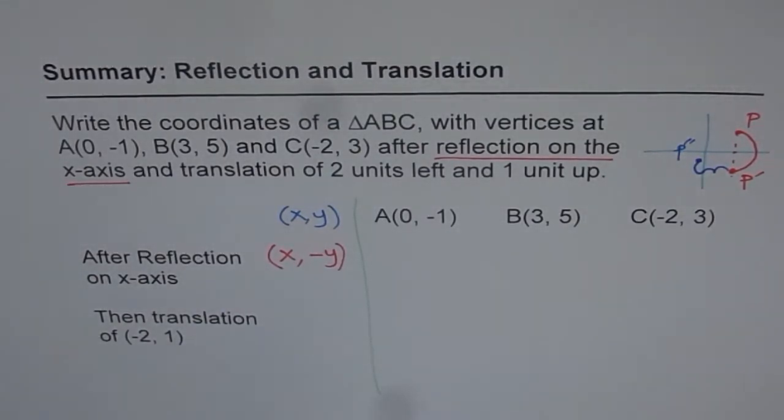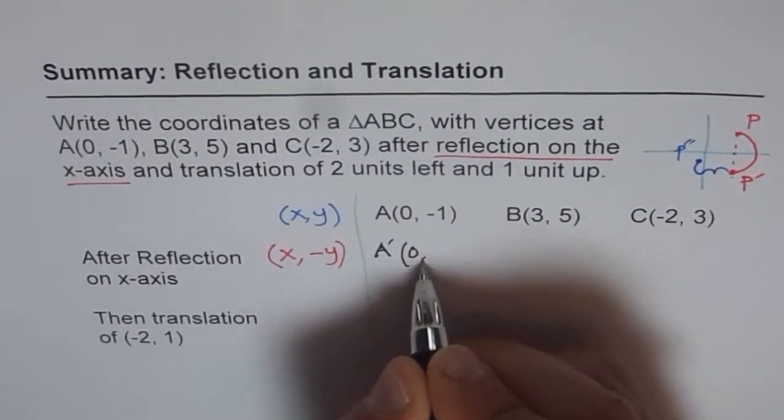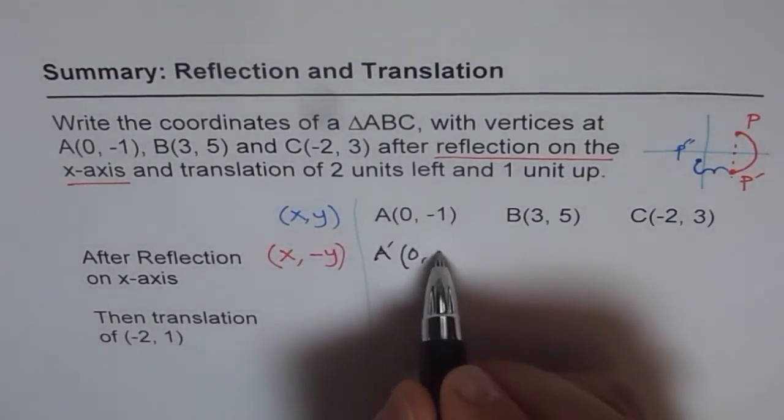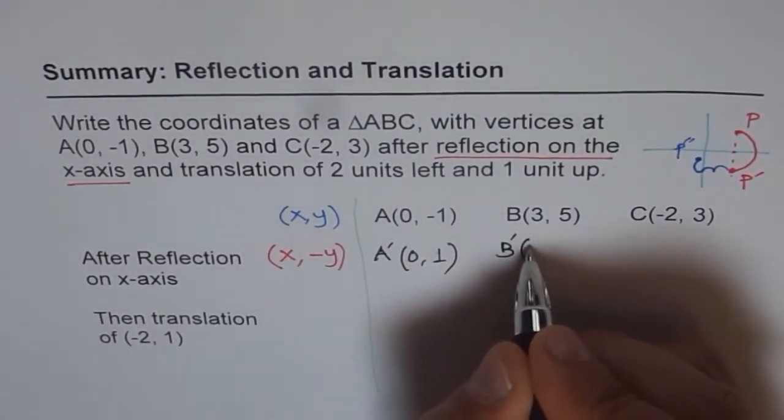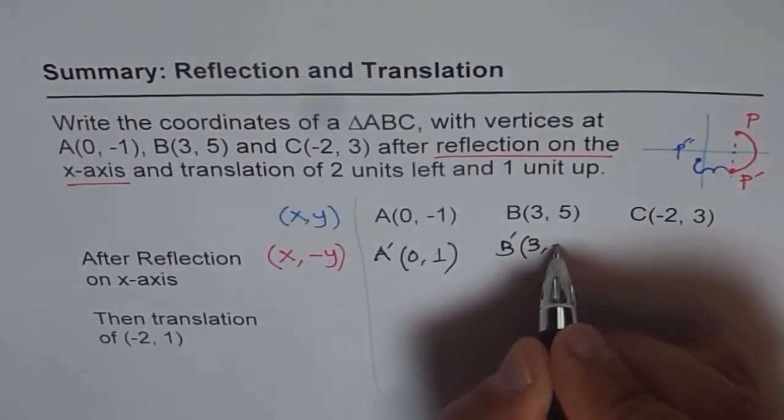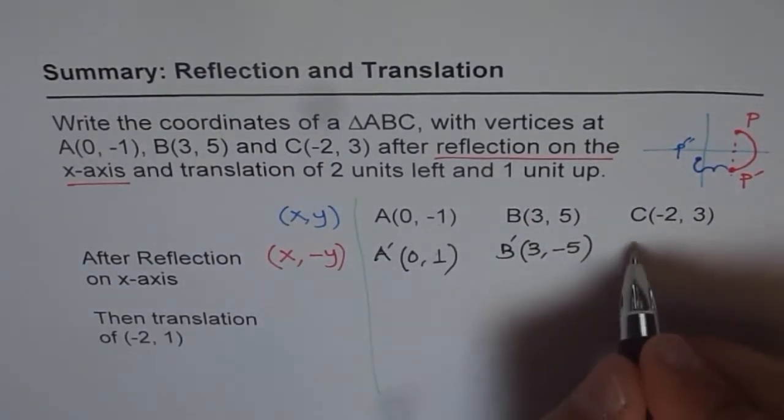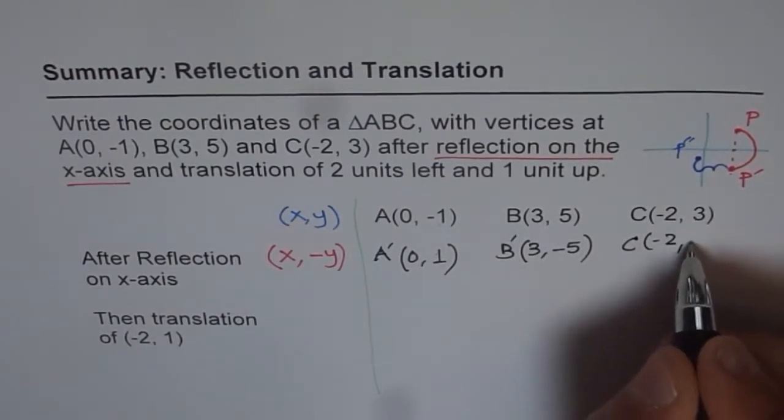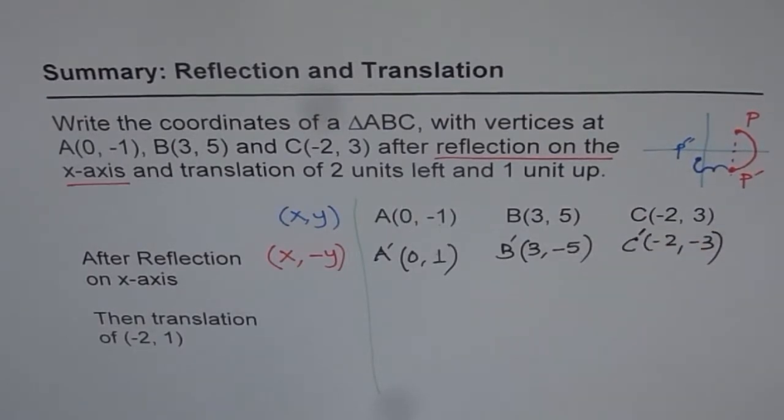So let us write down our answer now. So we get x-value is same, so A' will have same x-value and the y-value will change the sign. So it is negative, it becomes positive. That's what it means. For B', x-value remains same, y-value will change the sign. So it was positive, we made it negative. For C, x-value remains same, y-value changed the sign. So that is the first part, we have already done reflection.